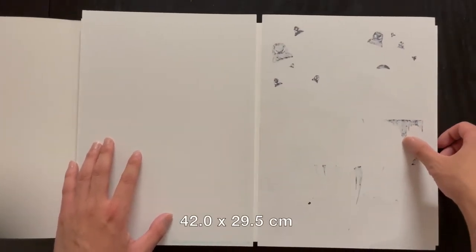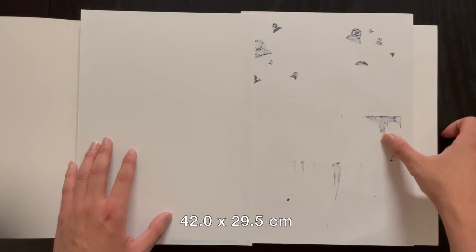So to get a double page spread, you need dimensions similar to 29 and a half centimeters in length and 42 centimeters in width.